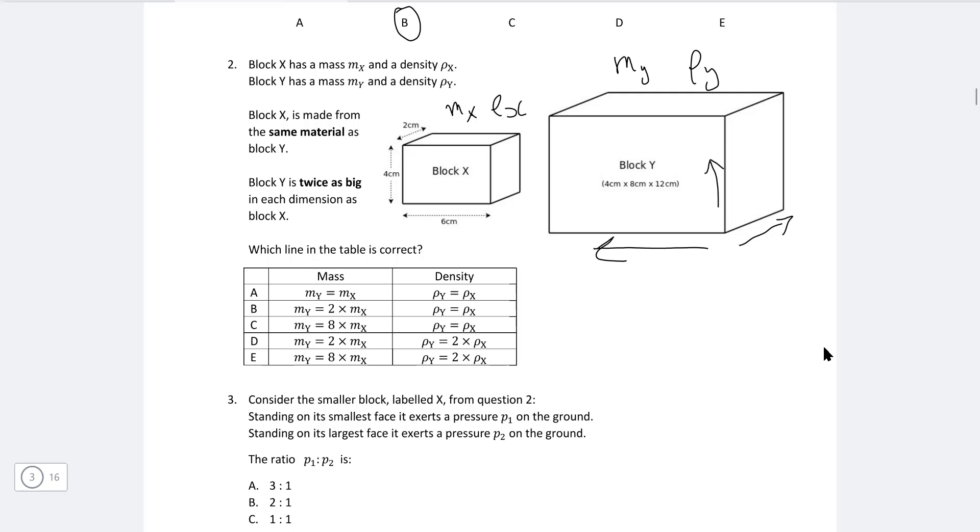Now because each dimension is twice as big, this means that the material will become twice, will have twice the mass, three separate times. I.e. we need to multiply by two, three times like so. And two times two is four times two, which is eight. So the correct answer is C, MY is eight times MX.